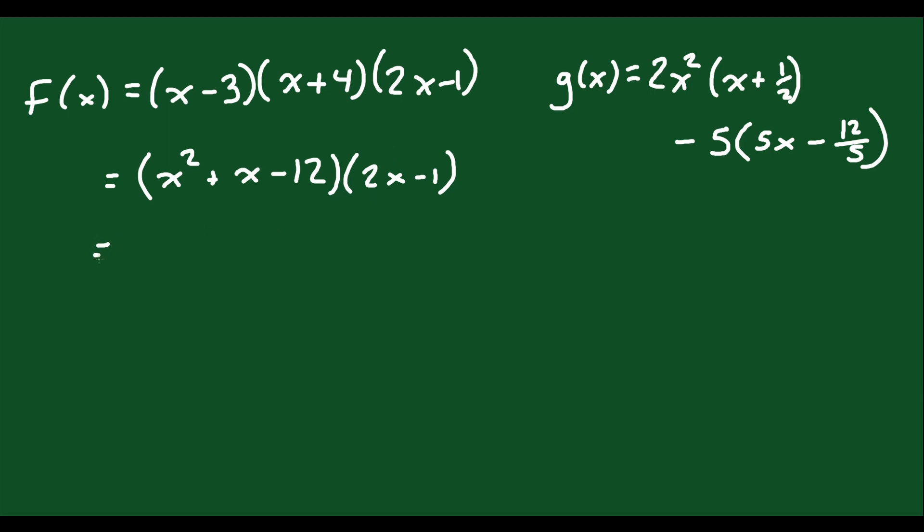Now we multiply this out. x squared times 2x is 2x cubed. x squared times minus 1 is minus x squared. x times 2x is plus 2x squared. x times minus 1 is minus x. Minus 12 times 2x is minus 24x. Minus 12 times minus 1 is plus 12.